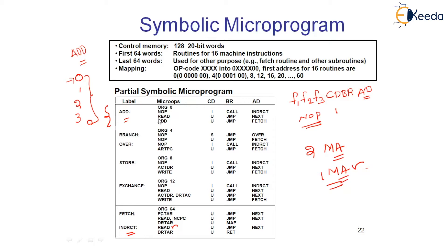Another read operation then needs to be performed to make the total memory access count two. The indirect routine performs one memory access, and the actual micro program performs one more, making the total two. If it is a direct address, only one memory read is required. After the read, the operand is fetched into the data register, and the data register holds the final operand — so we are all set to perform addition.